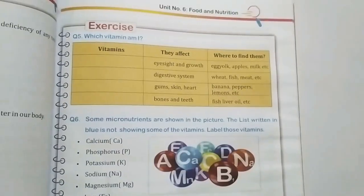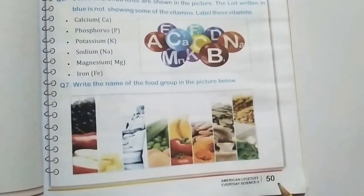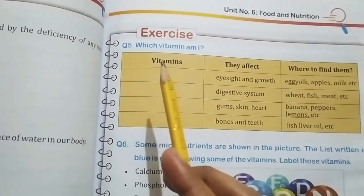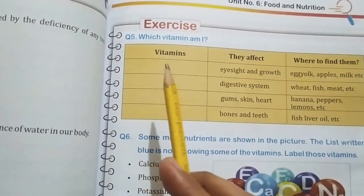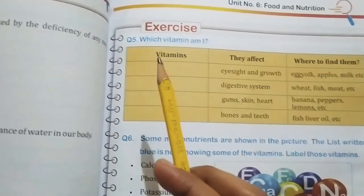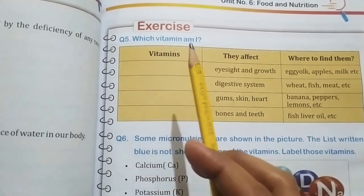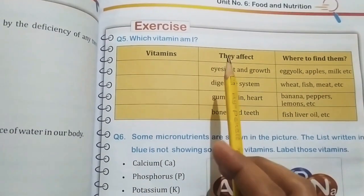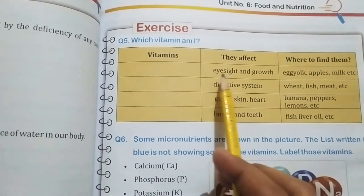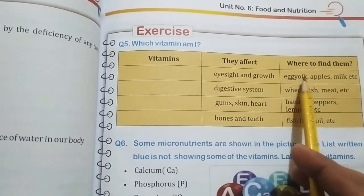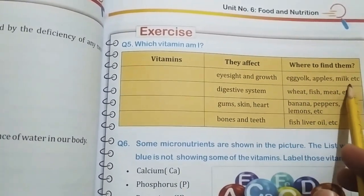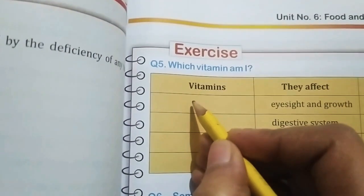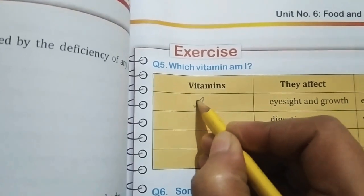Now we'll move to question number five at page number 50. Question five is very easy — you just have to write A, B, C, and D, because they're asking 'which vitamin am I?' They've left a column blank. The first clue: dash affects eyesight and growth and is found in egg yolk, apples, and milk. The answer is vitamin A.